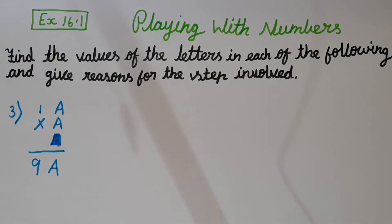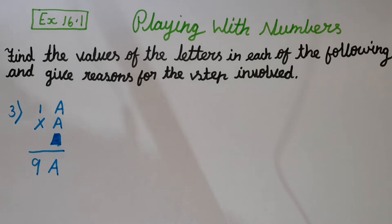Now let's jump into the video. Let's read the question. Find the values of the letters in each of the following and give reasons for the steps involved. Our third question is 1A into A equals 9A. In this we have to multiply A and we should get the answer 9A. So before solving it, we should find the value of A.